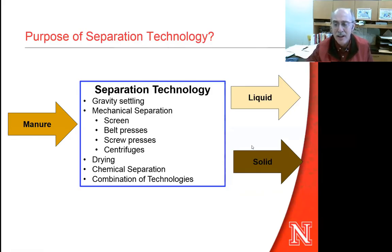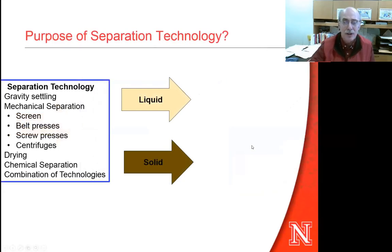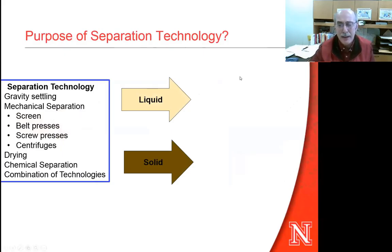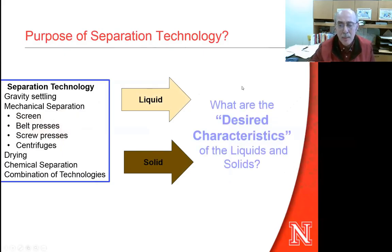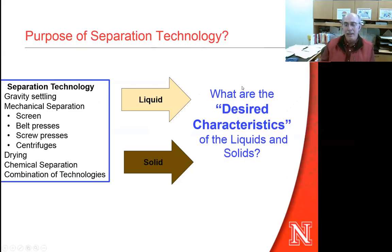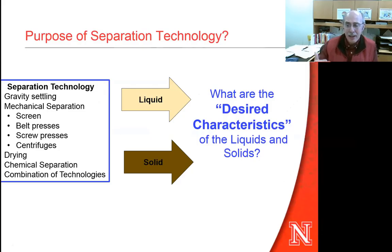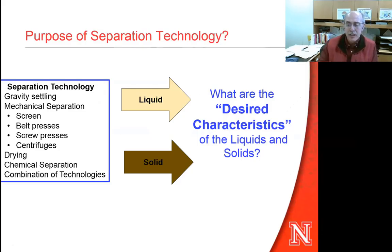Each of us have different expectations and different needs. So really, by looking first at the products coming out of this — what are the desired characteristics that you, as an animal feeding operation, would like to have for those liquids and solids — that often will define the preferred technologies that you should be looking at.